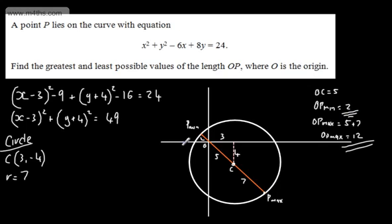And that's simply doing it geometrically. So we've considered completing the square on the circle, drawing a quick sketch, recognising that we've got this right-angled triangle, a Pythagorean triple.